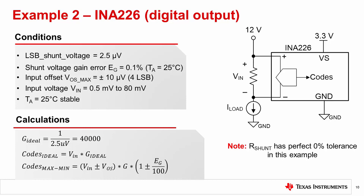Let's now consider an example using the INA226, which is a digital current sense monitor that converts the shunt voltage into digital code. Determining gain error for digital CSAs uses the same theory, but the math changes since the input voltage is not amplified, but rather converted into the digital realm.